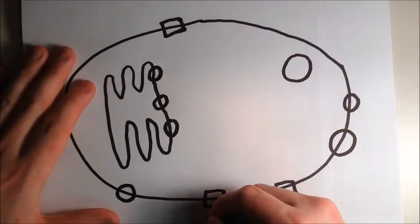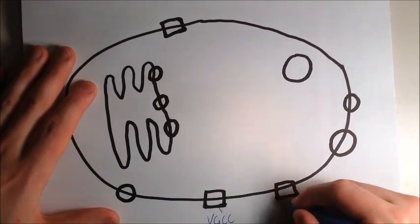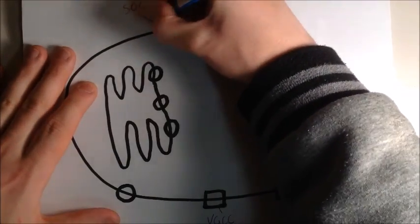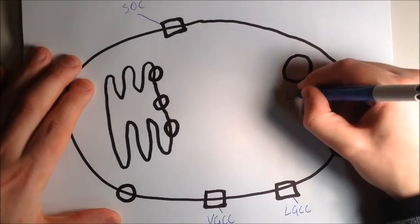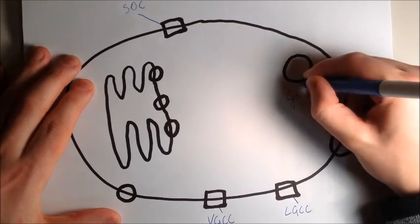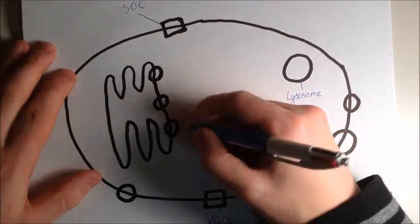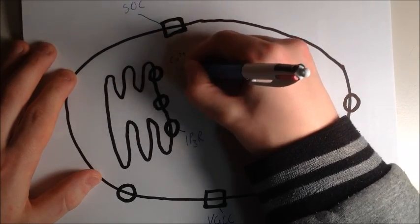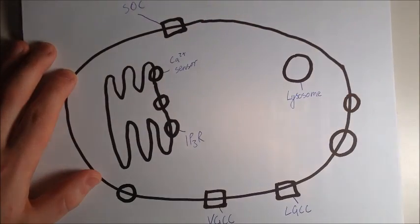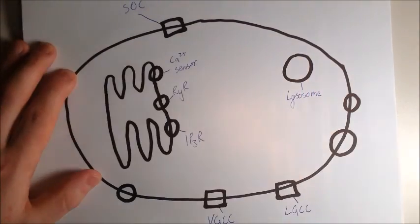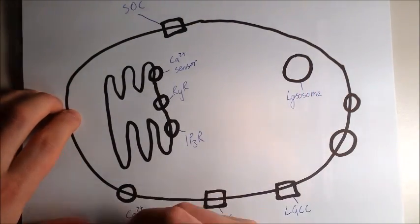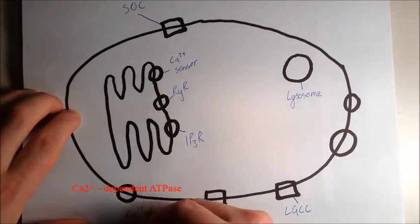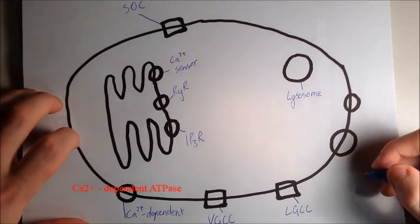The main receptors that need to be noted about calcium is the voltage-gated calcium channel, ligand-gated calcium channel, the store-operated calcium channel, a lysosome vesicle, which isn't a receptor but it's still important, the inositol triphosphate receptor, the calcium sensor, and the ryanodine receptor. We also have calcium-dependent ATPase, which is basically a pump similar to the sodium-potassium pump.